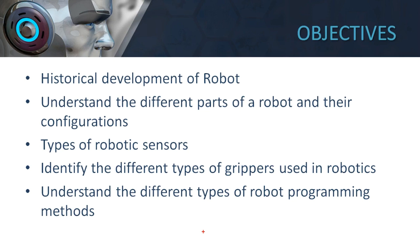Human beings have different sense organs and those sense organs are used for different purposes. Likewise, even robots have different sensors to feel and also to understand or analyze the data or the products the robot is coming in contact with. So we have to understand about those sensors.